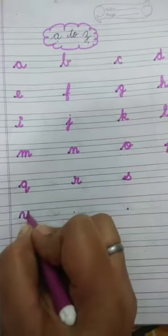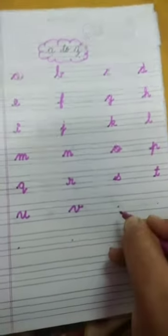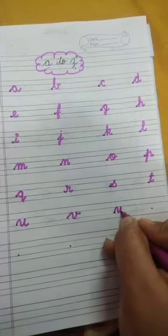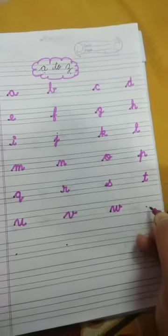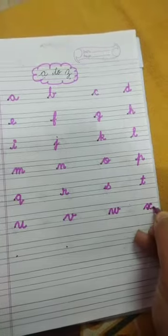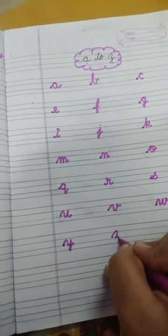U, U, Umbrella. V, V, Van. W, W, Watch. X, X, X-Mastery. Y, Y, Yo-Yo. Z, Z, Zebra. Again speak.